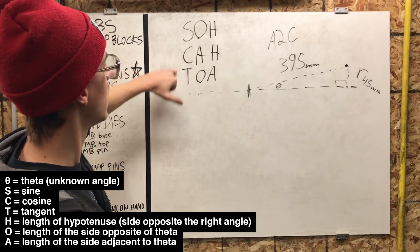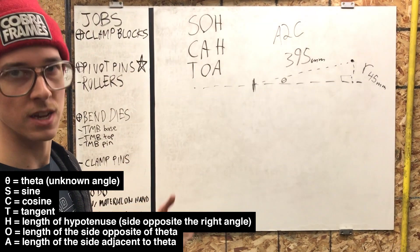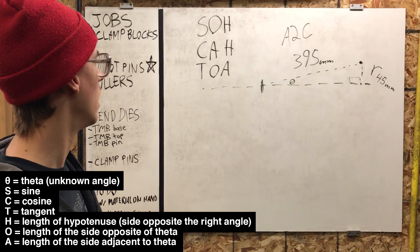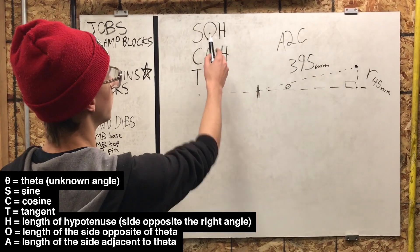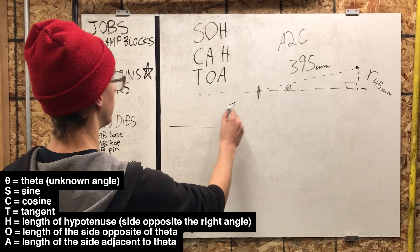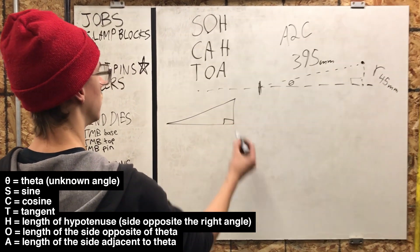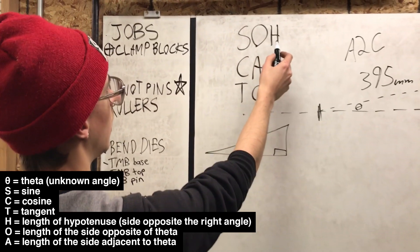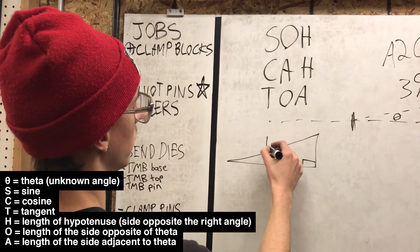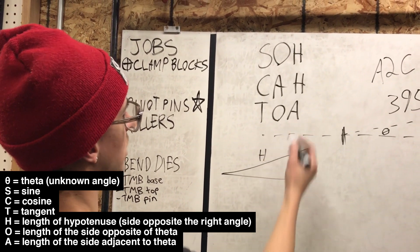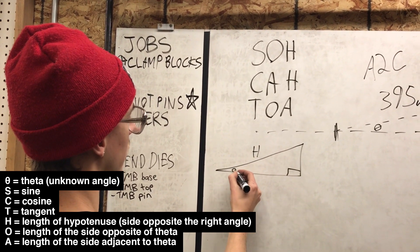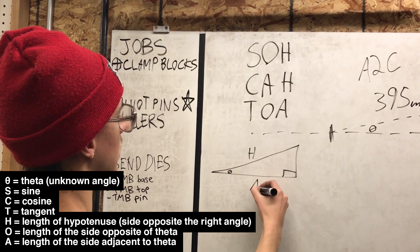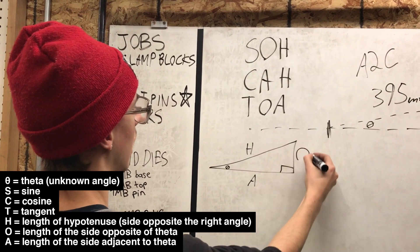There's sine, cosine, and tangent are the three main trigonometry functions. And so they relate to the different parts of the triangle. So you have a right triangle, and you have the hypotenuse, which is the long one, and then you have the adjacent side, if your angle is here, you have the adjacent side, and you have the opposite side of the triangle.